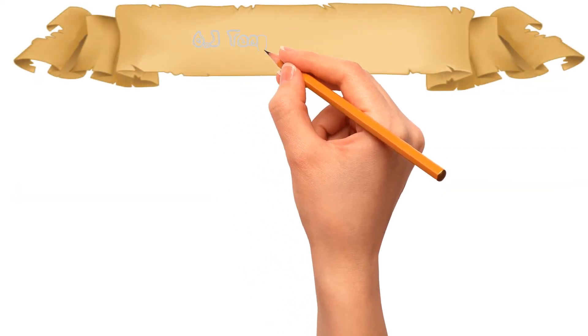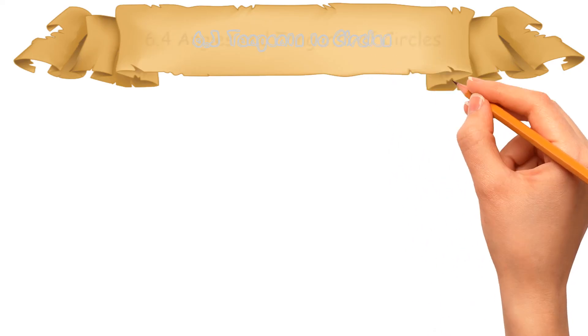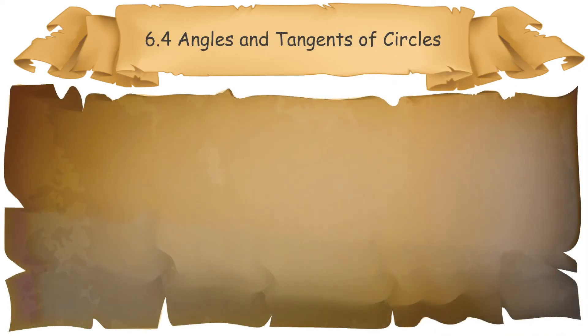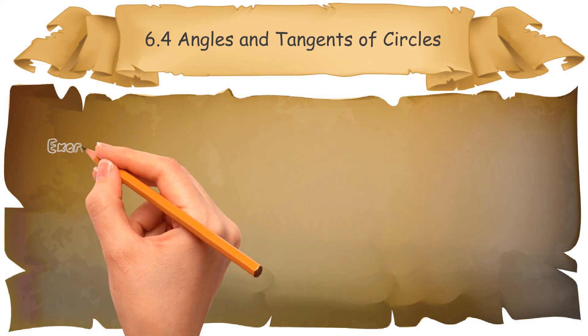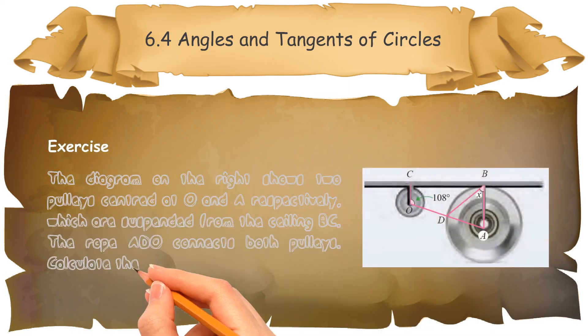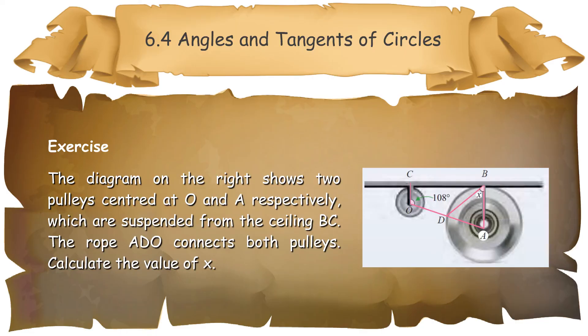6.4 Angles and Tangents of Circles. This subtopic is to solve problems involving angles and tangents to the circle. Let's take out a paper and try to do an exercise now. The diagram on the right shows two pulleys centered at O and A respectively, which are suspended from the ceiling BC. The rope ADO connects both pulleys. Calculate the value of X. Please pause the video to do the exercise, and after you finish, you may check the answer in the description.